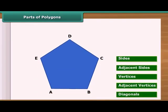The line segments AB, BC, CD, DE and EA form the polygon ABCDE. These are the sides of polygon. Any two sides with common end points are called adjacent sides.